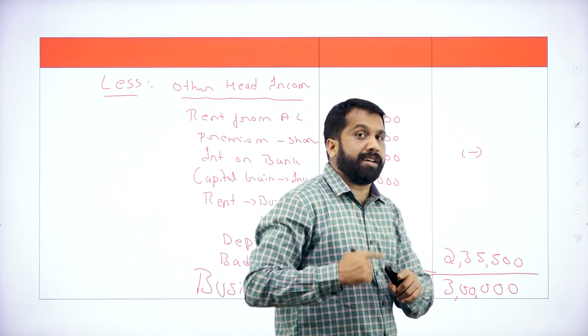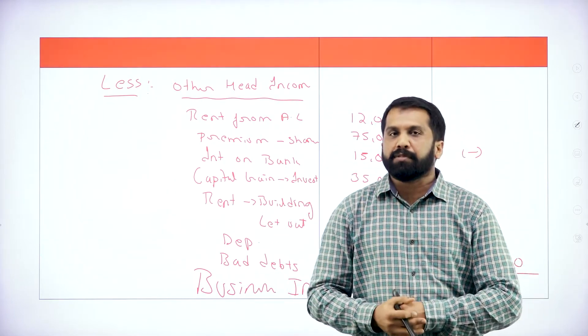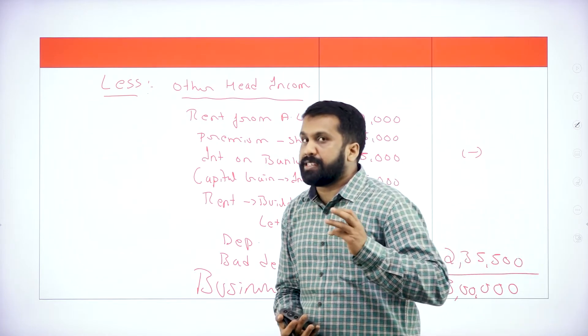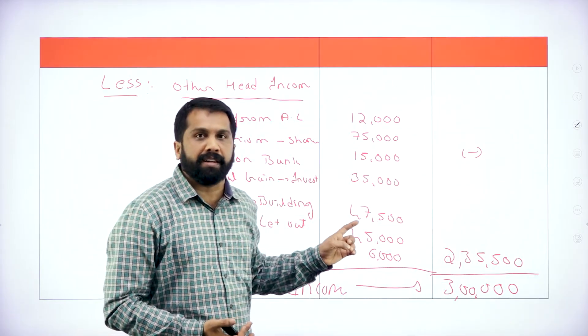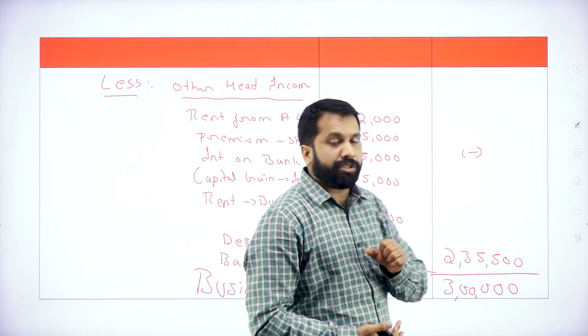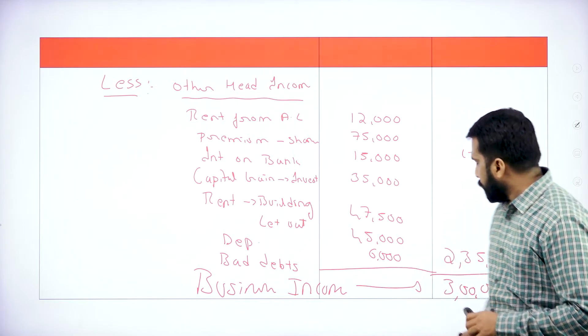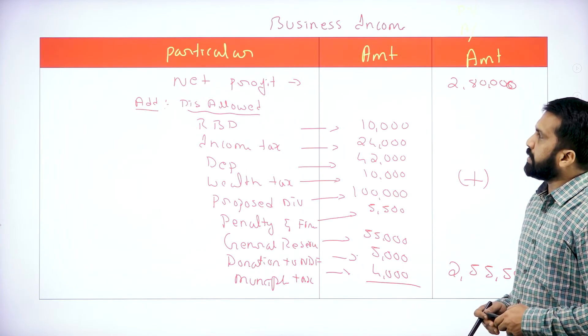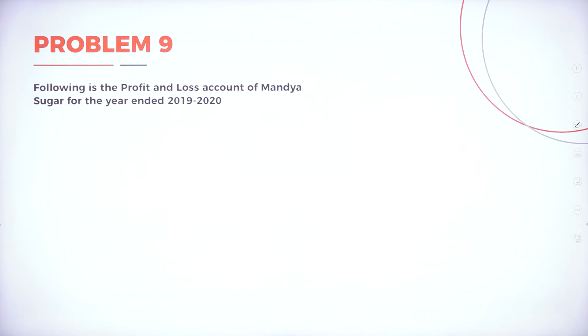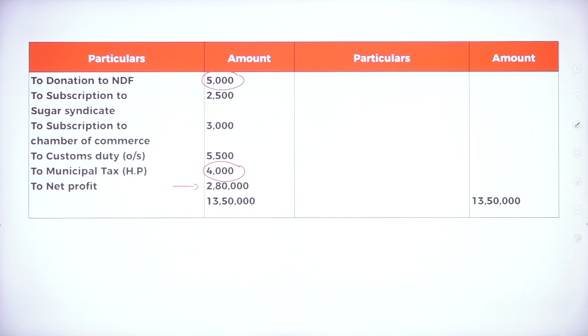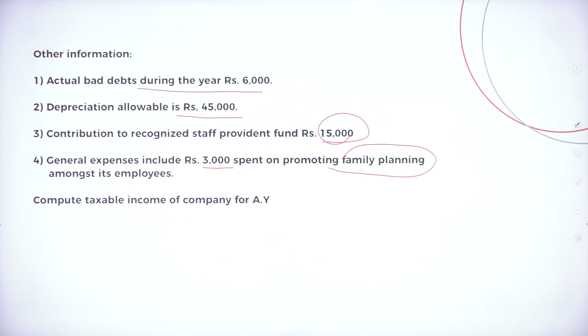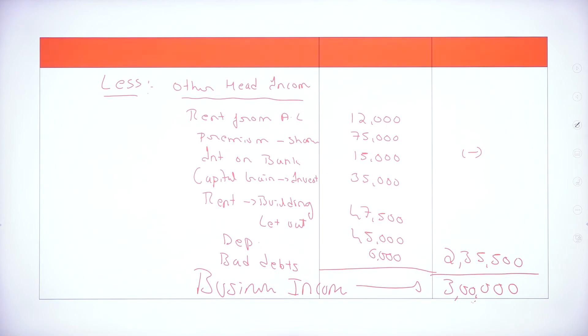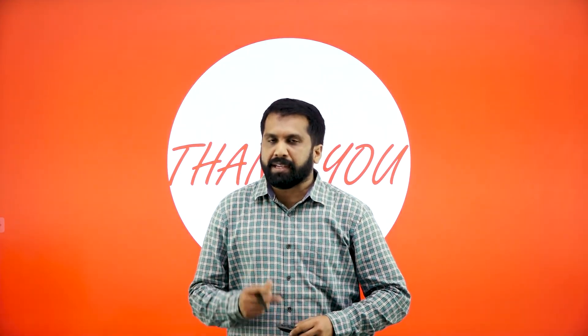Once you are done with your business income, you are supposed to go for total income. Income from salary is always nil. Income from house property is given. Income from capital gain is there. Income from other sources is there. Income from business or profession is 3,00,000. Do the total income in the exam also. This is all about today's session — we are done with Assessment of Company. We will go with a new topic from the next session. Thank you.